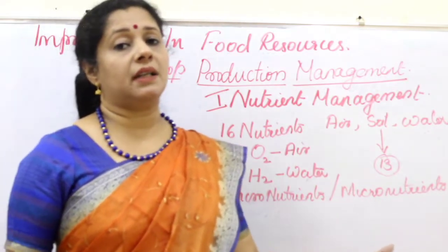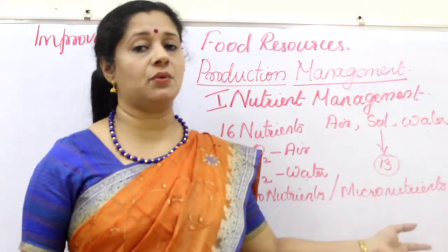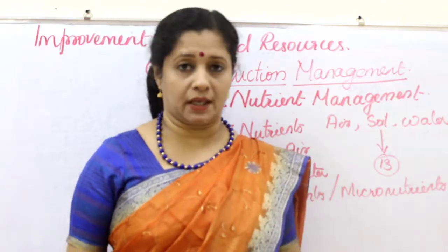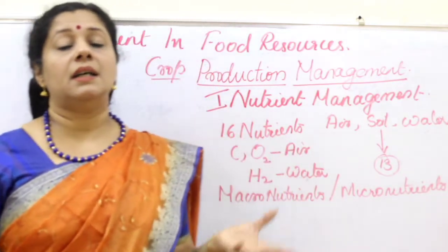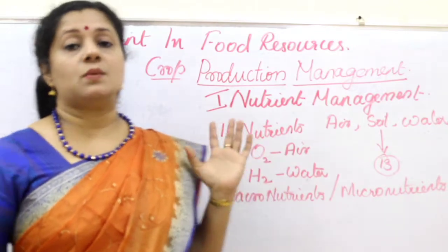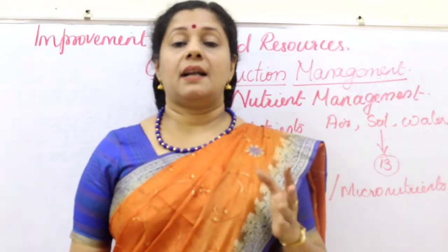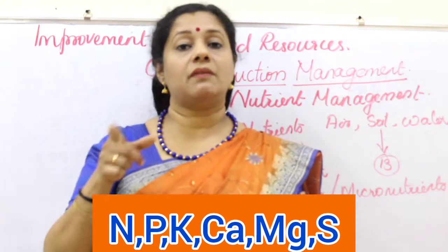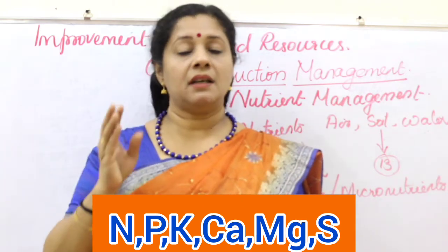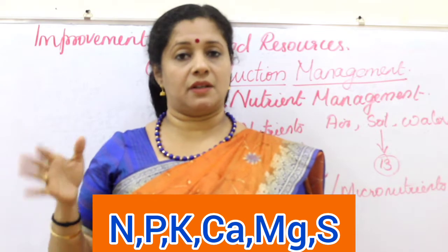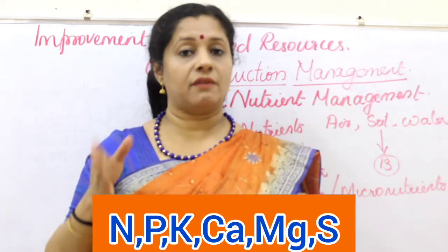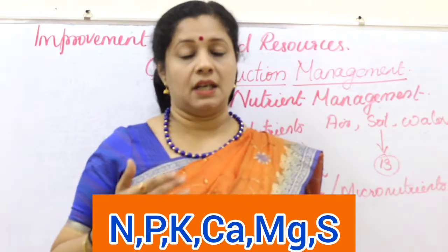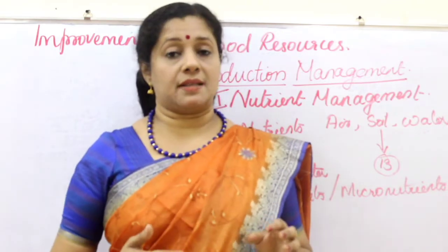Of the 13 soil-derived nutrients, six are macronutrients and seven are micronutrients — required in very small quantities. The macronutrients are Nitrogen, Phosphorus, and Potassium (NPK — the most important), plus Calcium, Magnesium, and Sulphur. The seven micronutrients are Iron, Manganese, Boron, Zinc, Copper, Molybdenum, and Chlorine. All these minerals have their own specific roles in plant growth.